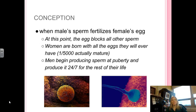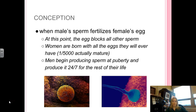In terms of conception, when a male sperm fertilizes a female's egg, that is when conception occurs. At this point, the egg is going to block all other sperm, which will help to facilitate the fertilization process. Women are born with all the eggs they will ever have, which is a pretty staggering statistic since only one in 5,000 actually mature.